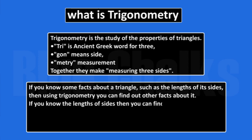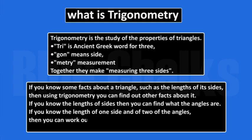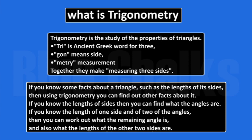If you know some facts about a triangle, such as the length of the sides, then using trigonometry, you can find out the other facts about it. If you know the length of the sides, then you can find what the angles are. If you know the length of one side and two of the angles, then you can work out what the remaining angle is and also what the lengths of the other two sides are.